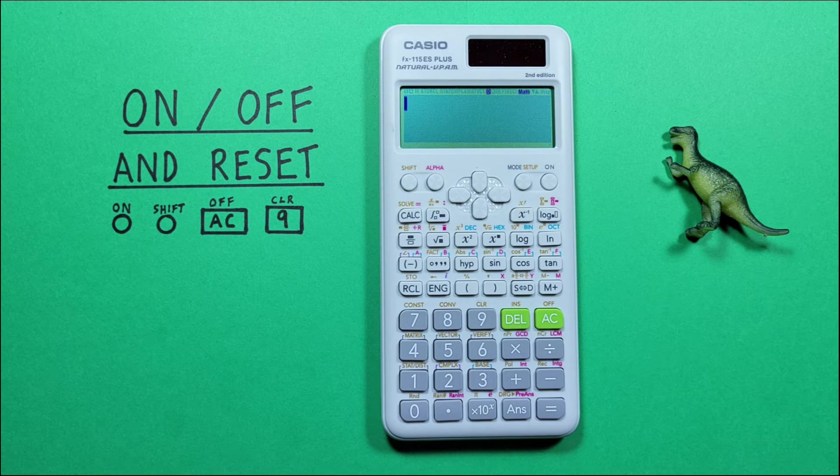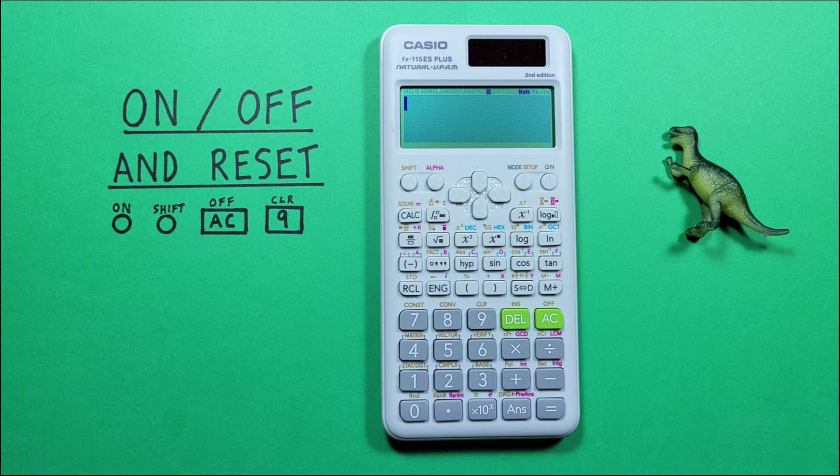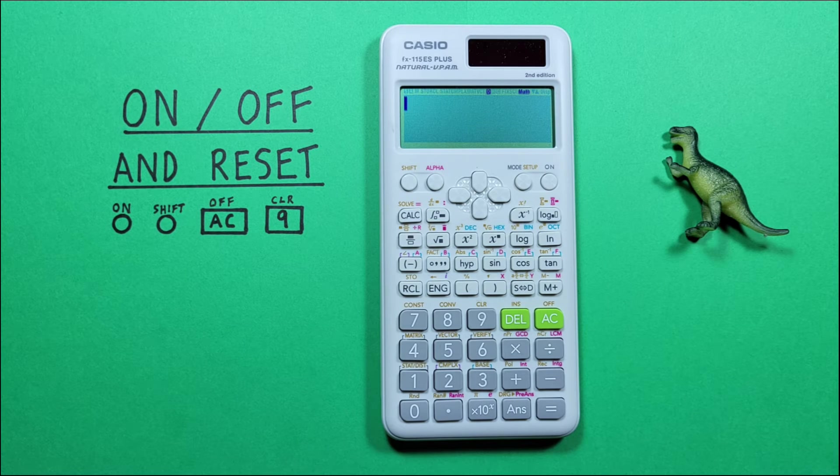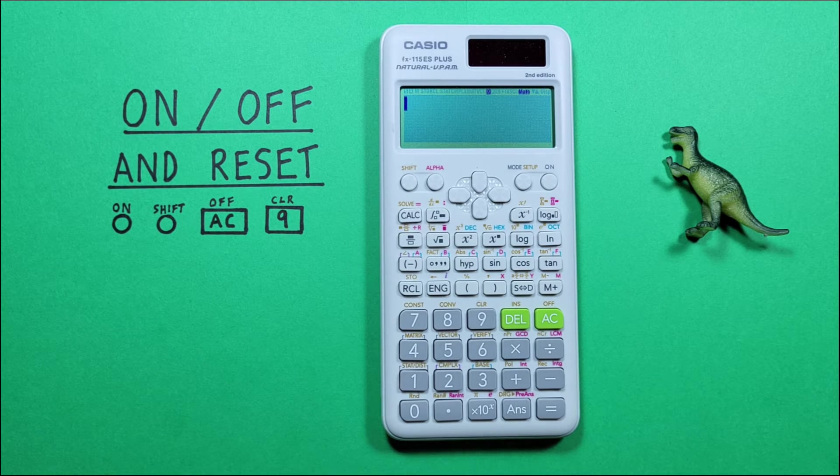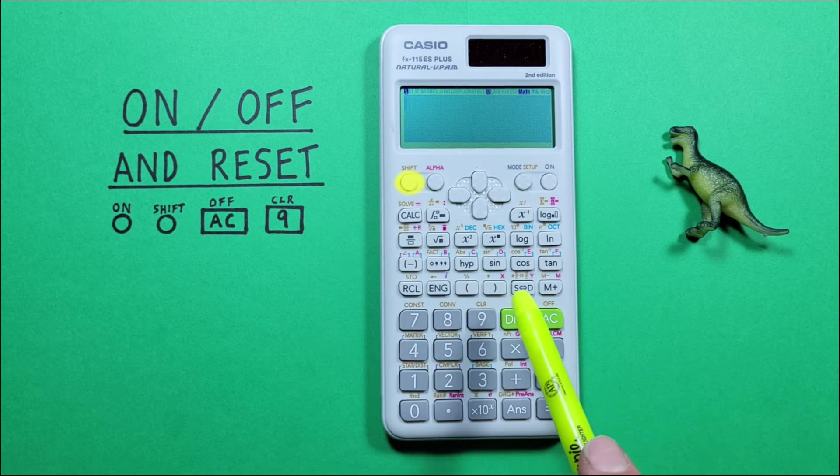If we find we've accidentally changed a setting or done something with our calculator and we don't know how to undo it, what we can do is reset our calculator. We do this by pressing the SHIFT key and then the 9.